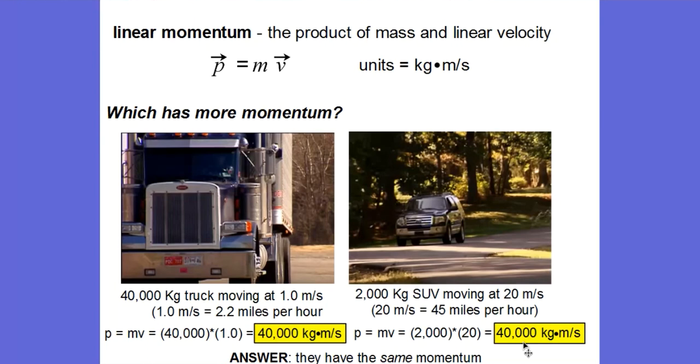So heavy things and light things can have the same momentum because velocity is also a factor. A very large ship sitting still in the water has no momentum, whereas a very small object, a bullet, moving at a very high velocity, has a lot of momentum.